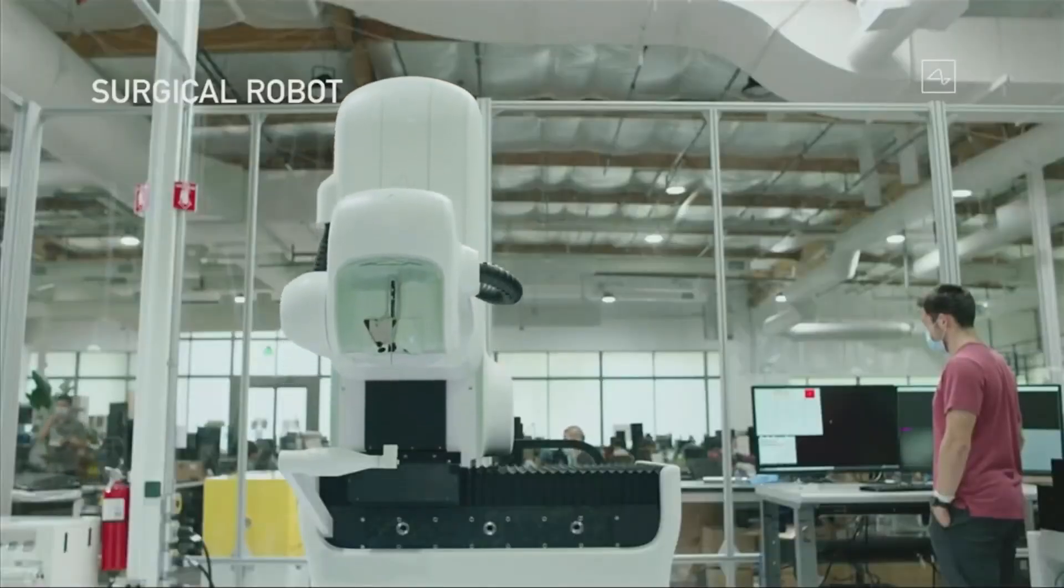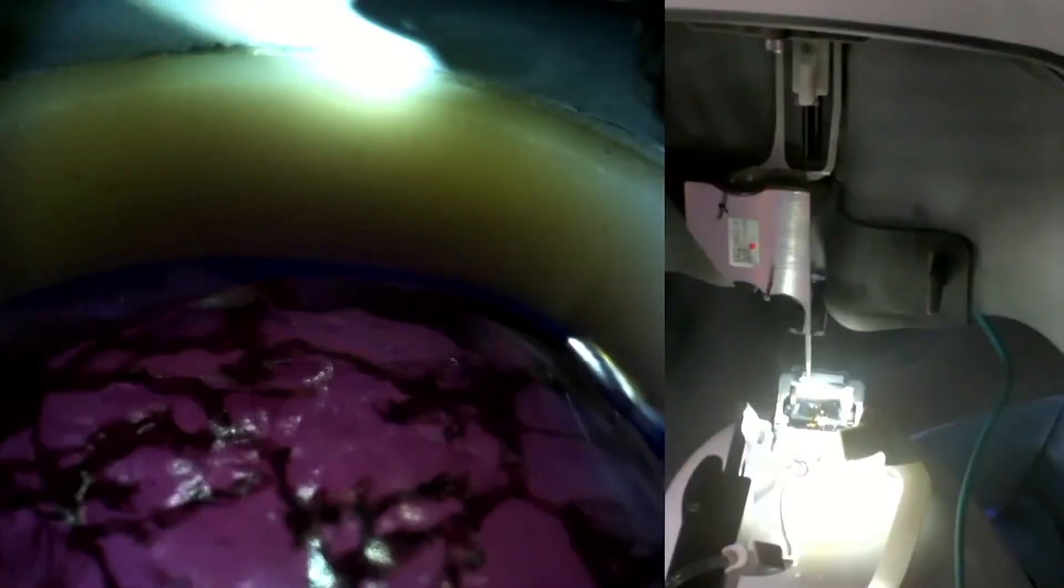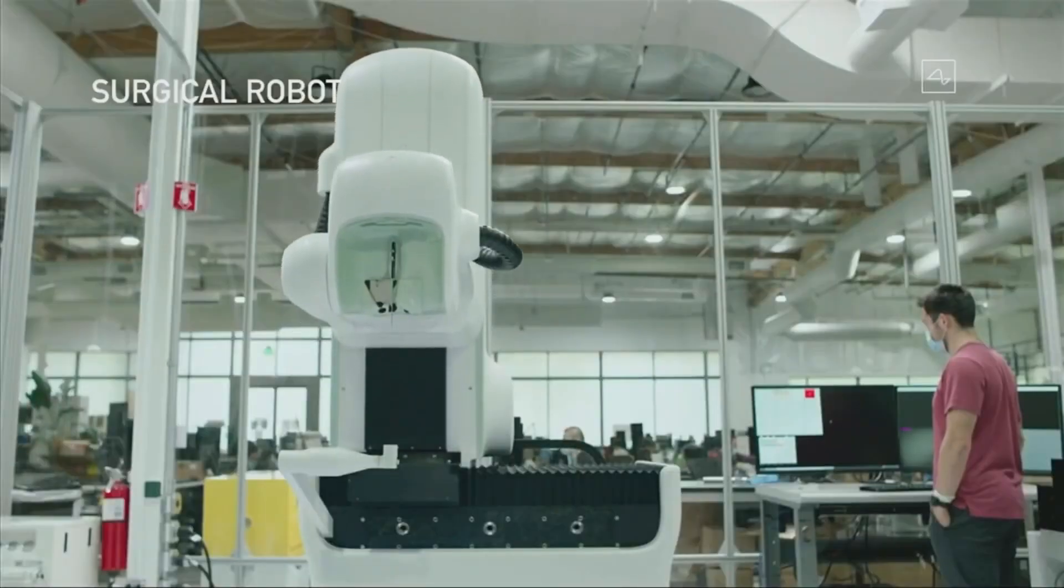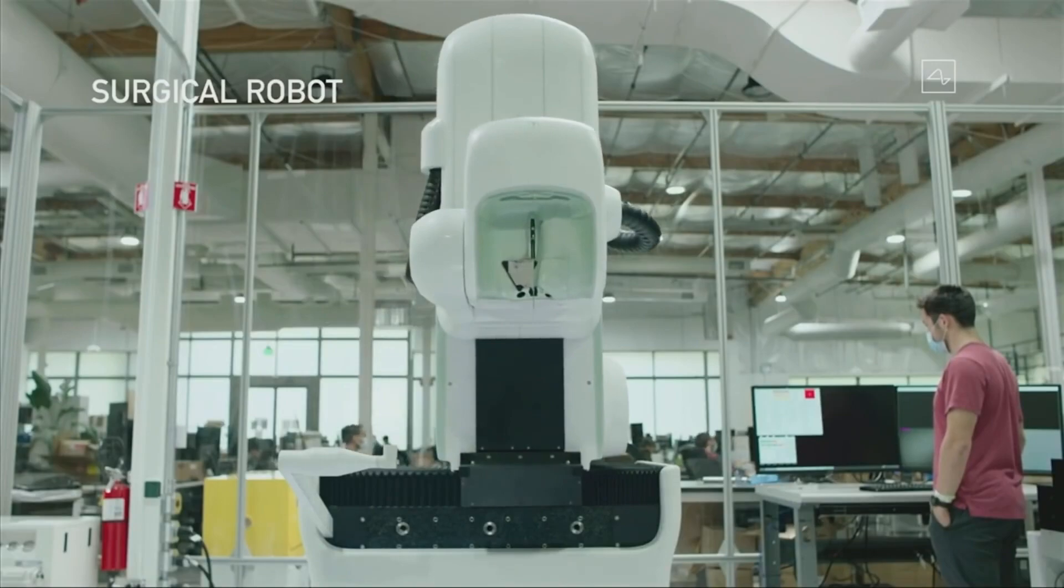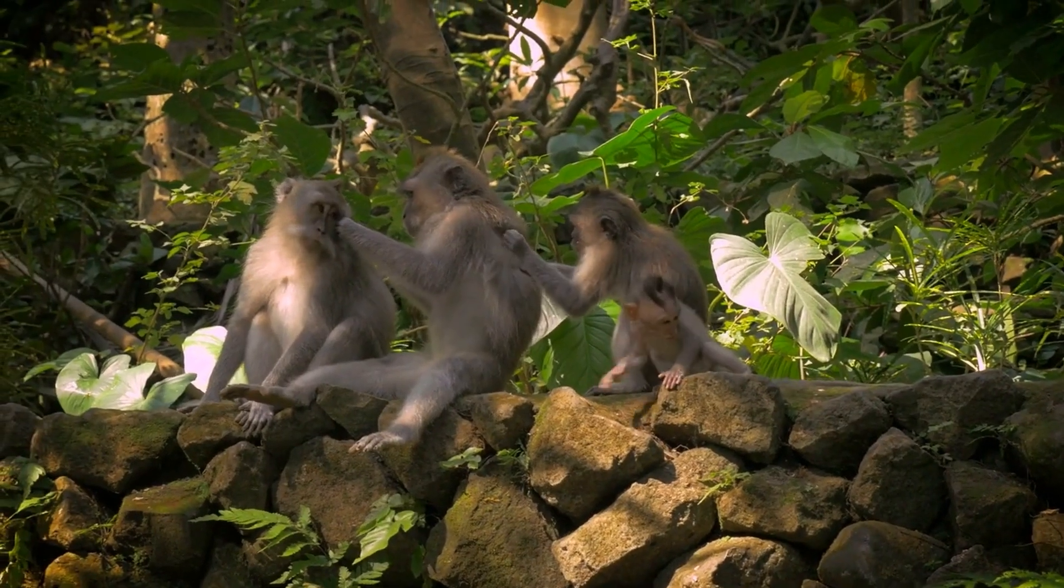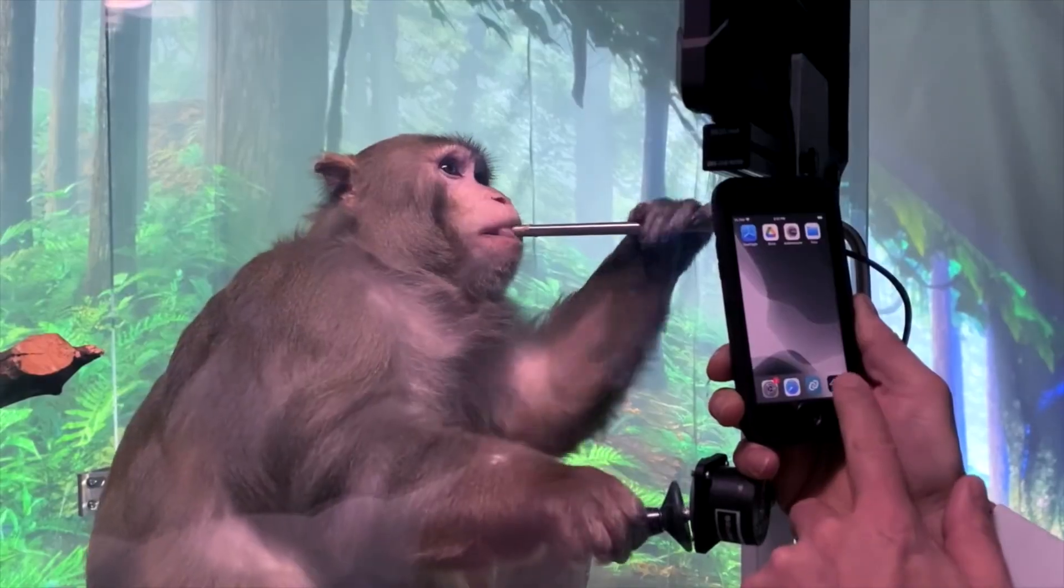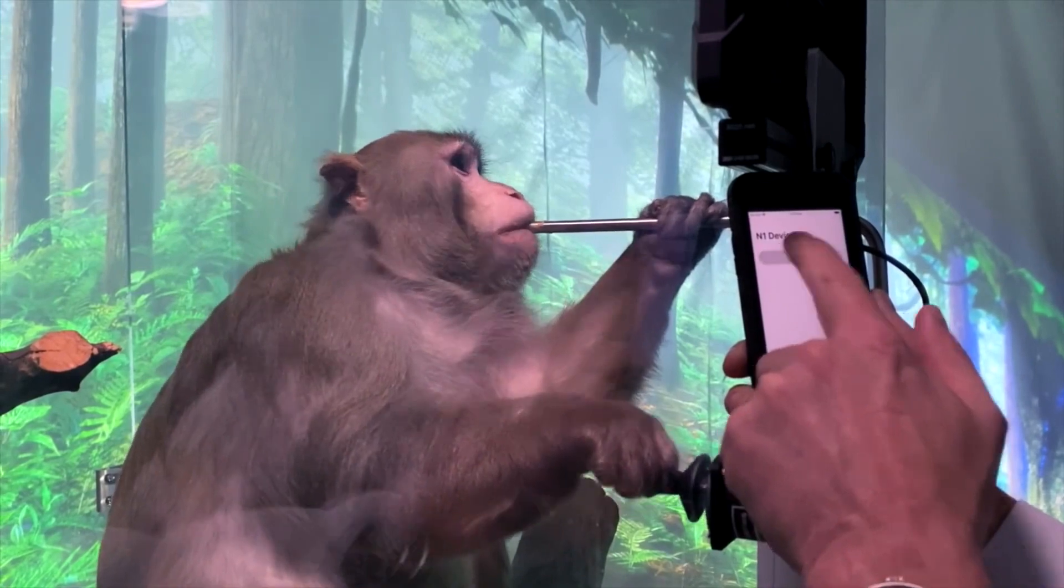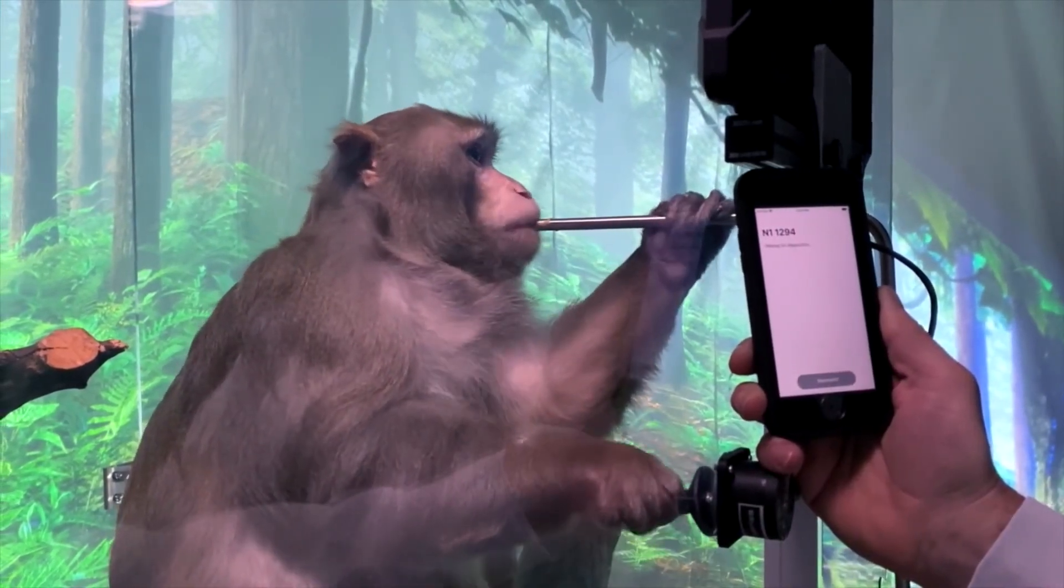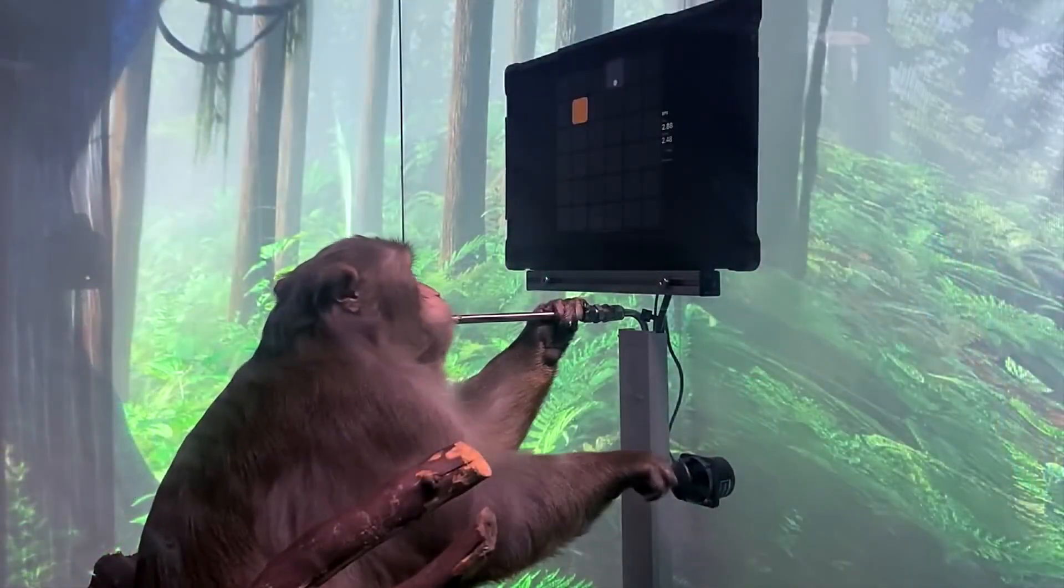Neuralink has made significant progress in the field of brain-machine interface in the past six years. The company has demonstrated brain-machine experiments on primates, as well as implanting devices in pigs and monkeys. In one of the videos released, a monkey played ping-pong with his mind. In the experiment, a monkey implanted with electrodes and chips in its brain moved the computer cursor to a designated place using a joystick and was rewarded with food for completing it.